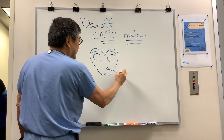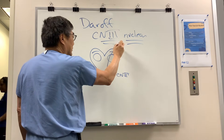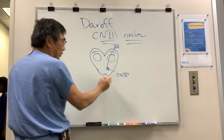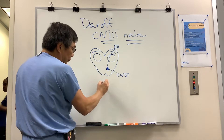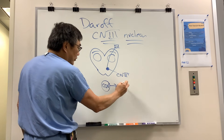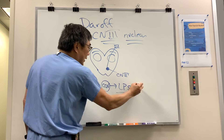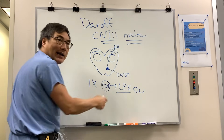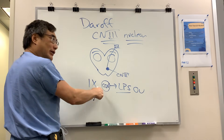Here's the nucleus of cranial nerve number three. It's different than its fascicle, which is the part inside the brain, and its peripheral component. This nucleus has a unique organization. The first thing is there's a single central caudal nucleus, and that controls the levator palpebrae superioris. Because there's only one of these, you either get bilateral ptosis or no ptosis with a nuclear lesion.